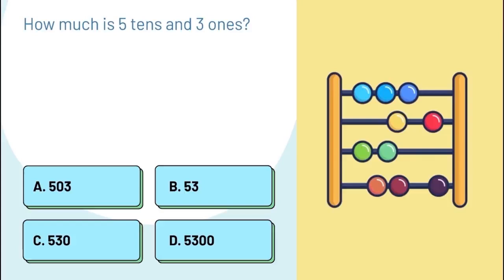How much is 5 tens and 3 ones? Option A, 503. Option B, 53. Option C, 530. Option D, 5300.